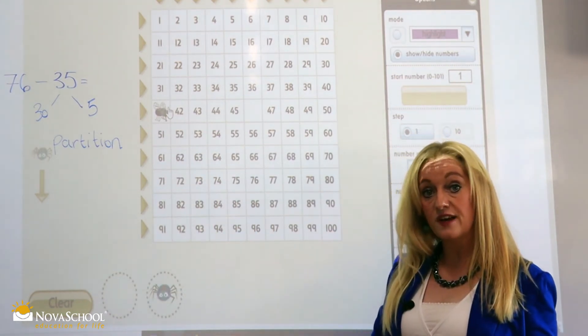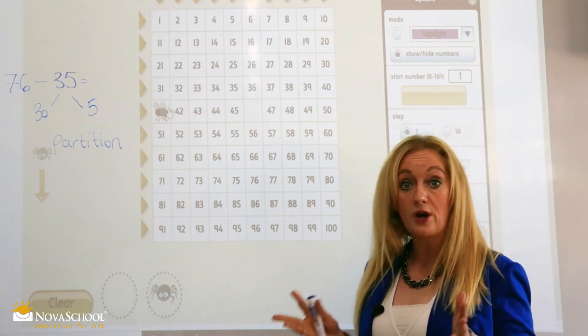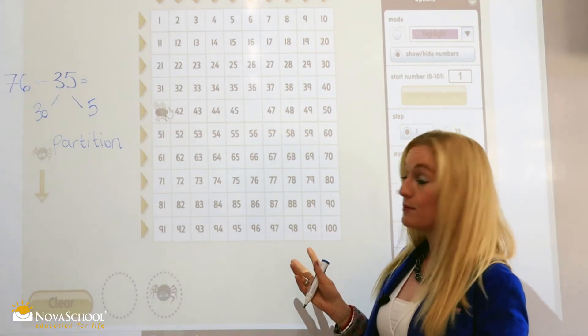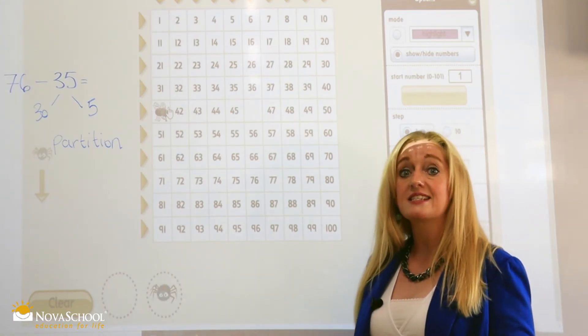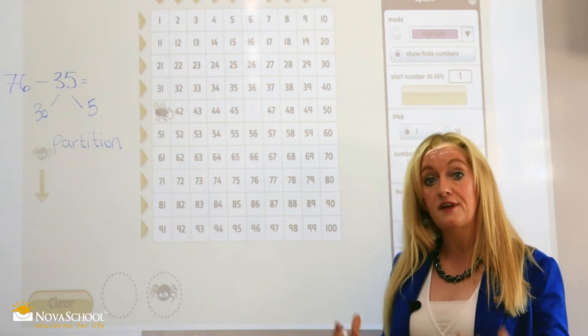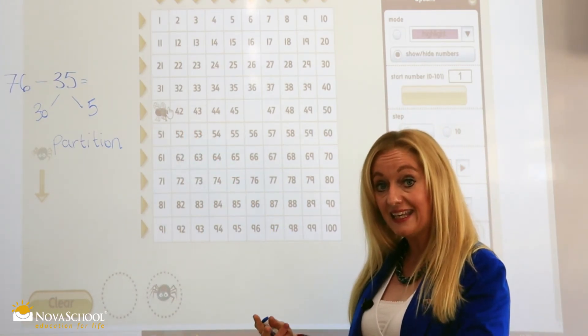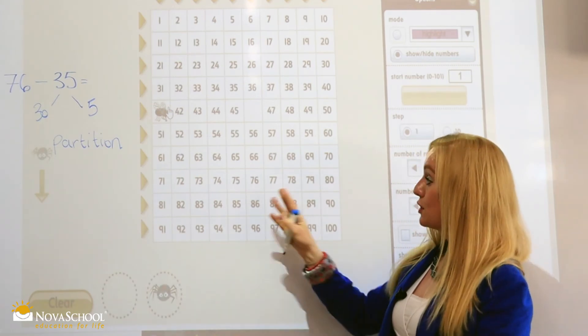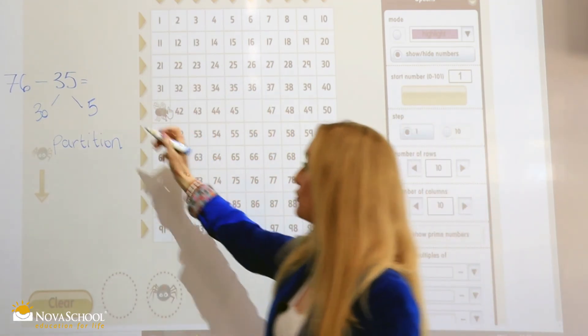So we've done the 10s first and then the 1s, okay? Which is called partitioning. And this is one of the methods that we use in Abacus to help the children understand place value, for them to understand the value of a number. That we were subtracting 30 and 5. So we went up and across. Our final answer is 41.